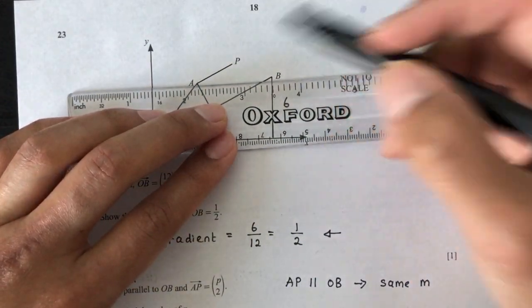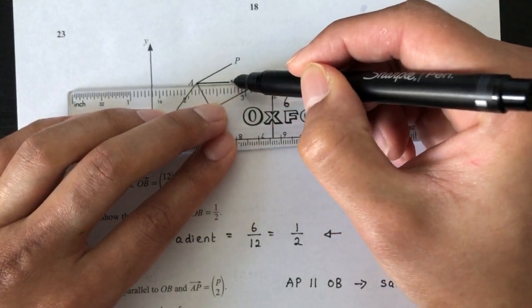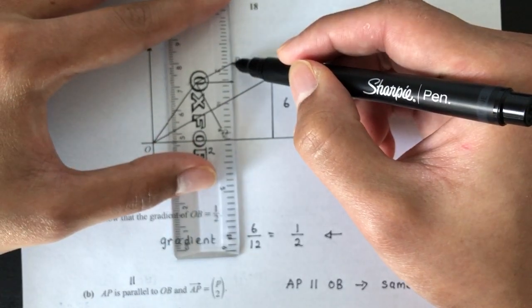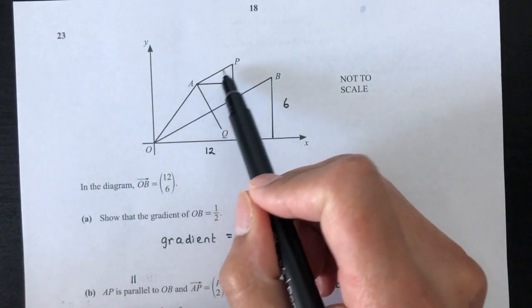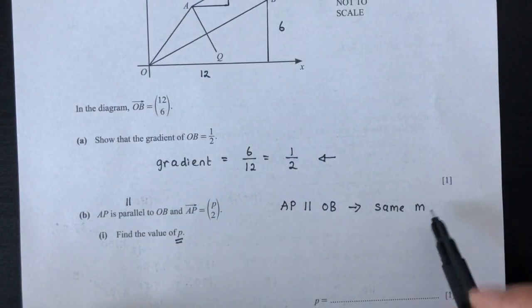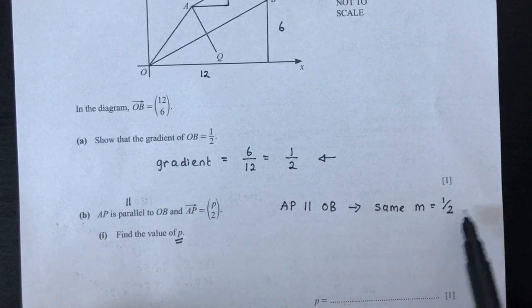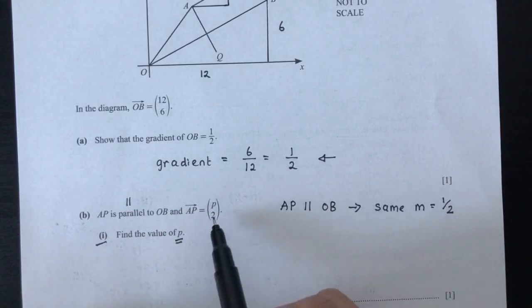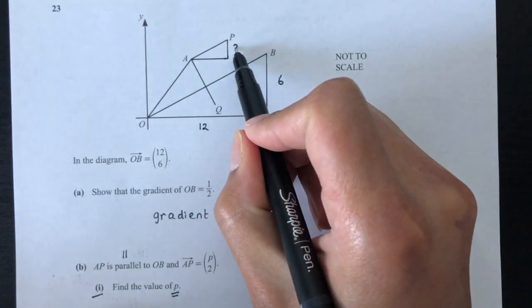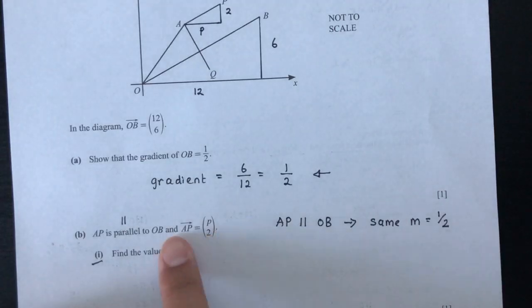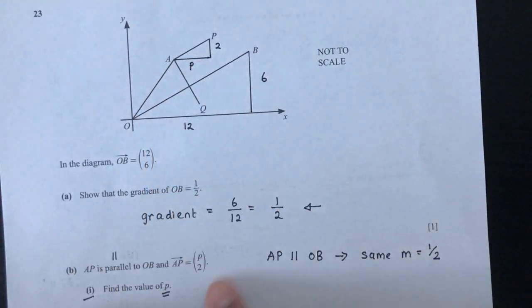So from A, if you go to P, it will be this distance, and then this height. So that will give you, this slope will be the same M, which is M equal to this one, half. So we have to use this information to find the value of P. Pretty easy. We know that the height is 2. This is 2, and this is P, right? Because AP is P2, so P is your horizontal distance, and 2 is your height.